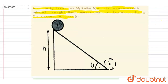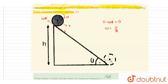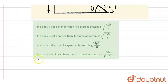This is a case of pure rolling, so the point of contact at any instant will have zero velocity. If the velocity of the center is v and the angular velocity is omega, then because of translation it has velocity v, and because of rotation it has velocity omega·r in the opposite direction. So the point of contact has zero velocity: v minus omega·r equals zero, giving omega equals v by r.